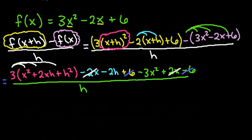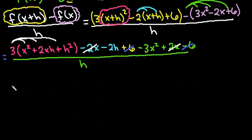So just so that I don't have to rewrite that, I'm going to go ahead and distribute the 3 in. And be very careful to make sure that you distribute the 3 to everything. So I would have 3 times x squared, which is 3x squared. 3 times 2xh, which is 6xh. And 3 times h squared would give me 3h squared.